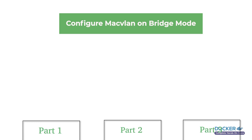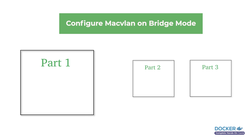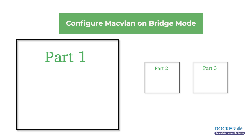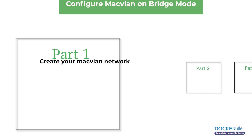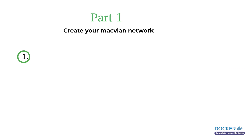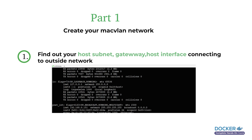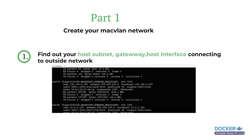To simplify the MacVLAN configuration, we are going to divide it into three parts. The first part will create the MacVLAN network. The subnet and the default gateway of your MacVLAN network should mirror those of your Docker host which connects to the external network. To find these details, you can run the ifconfig command on your Linux host.